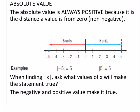But when finding the absolute value of x, we just want to know what values of x would make it true. So if we're looking at specific values without any operations, we're in pretty good shape. The negative and positive value make it true.